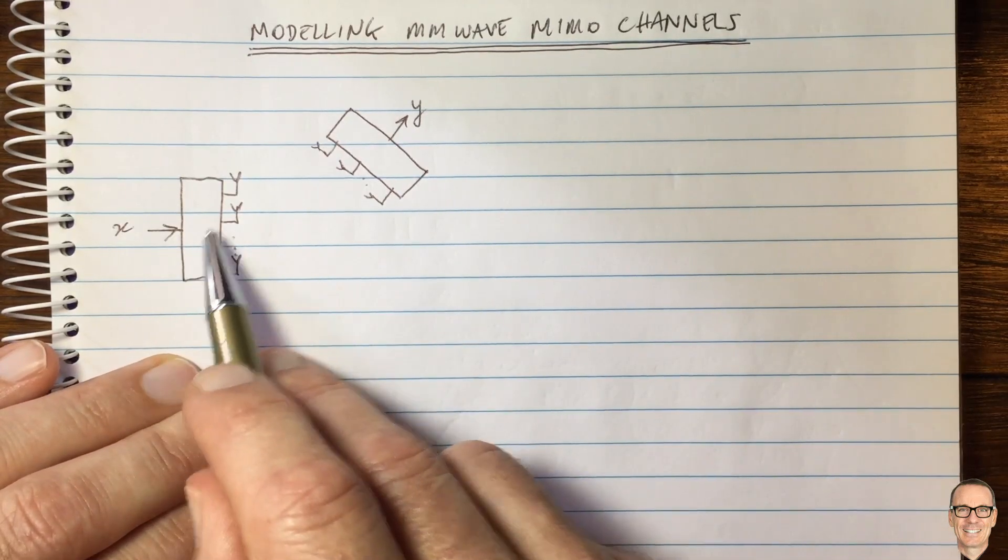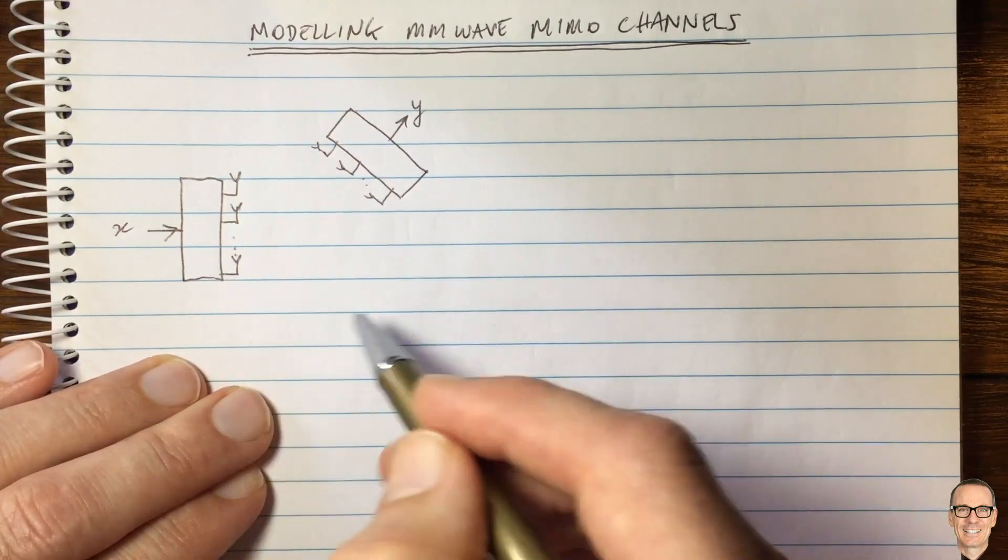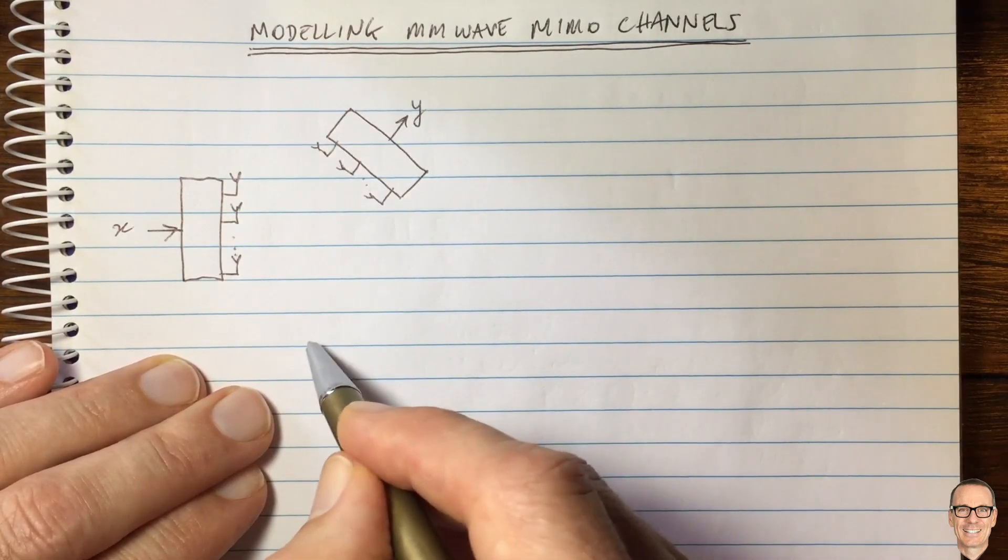So let's look here. This is a transmitter and a receiver, and I've deliberately drawn it at an angle so that we don't always think they're exactly facing each other because they never are in practice.